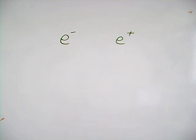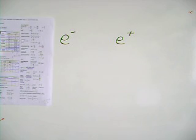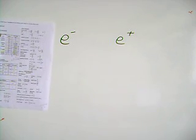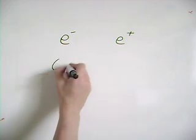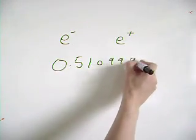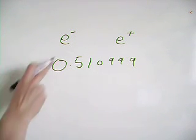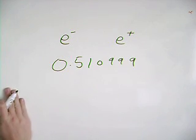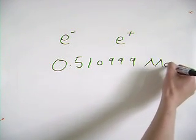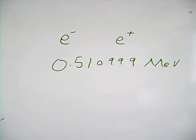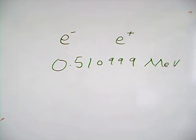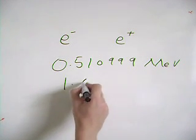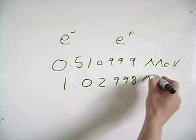What I'm going to show you now is how to calculate how much energy will be released during this process. You need the data sheet for this. The data sheet carries a lot of essential information that you're going to need in the exam and you need to know your way around it. It says on the data sheet that the rest mass energy of an electron is 0.510999 mega electron volts. And because antimatter particles have exactly the same rest mass, it's also the rest mass energy of the positron. So when these two particles annihilate each other, the amount of energy released will be double that, which is 1.21998 mega electron volts.